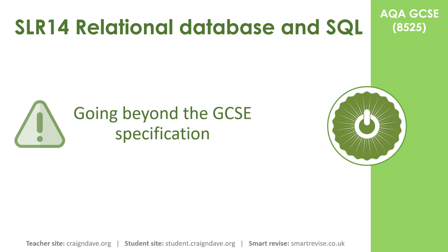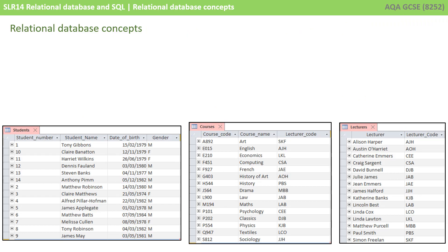That's all you need to know for the GCSE specification, but if you'd like to know a little bit more about relational databases, then carry on. This will certainly link into databases at A-level if you're thinking of studying the course further. Relational databases are a set of separate tables that are somehow related together. Here we have three separate tables: a table detailing details about students, a table outlining details of various courses they can study, and a table outlining various lecturers that teach those courses.